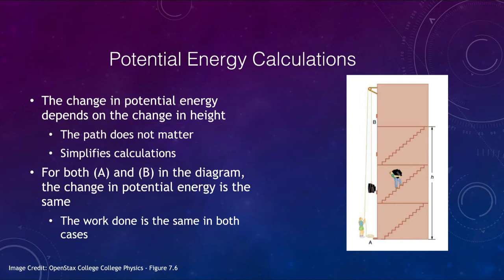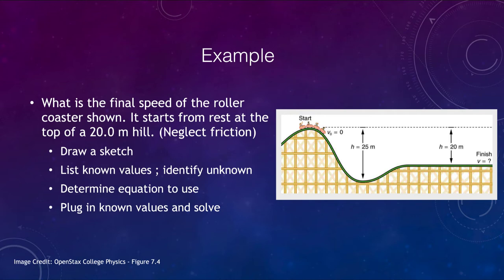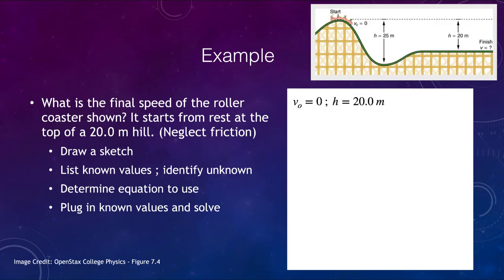Let's look at a roller coaster track. We're looking for the final speed of the roller coaster that starts from rest at the top of a 20-meter hill. The hill is 20 meters above the ground, and we want to find the velocity at the end. We know the initial velocity is zero and the height is equal to 20 meters.